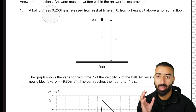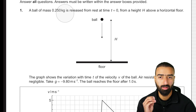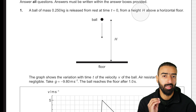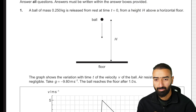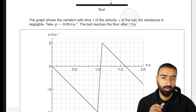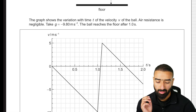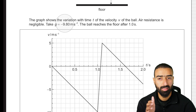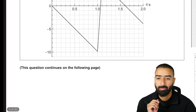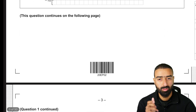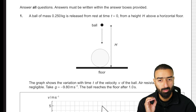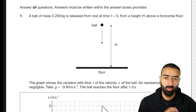Question 1. A ball of mass 0.250 kilograms is released from rest at time t equals 0 from a height h above a horizontal floor. The graph shows the variation with time of the velocity v of the ball. Air resistance is negligible. Take g as minus 9.80. The ball reaches the floor after one second. We are supposed to find the height.